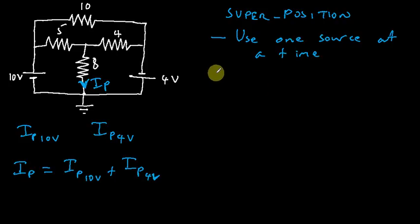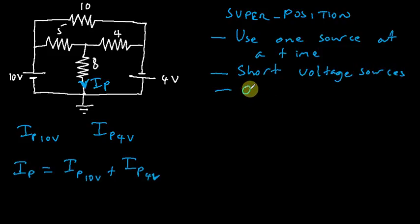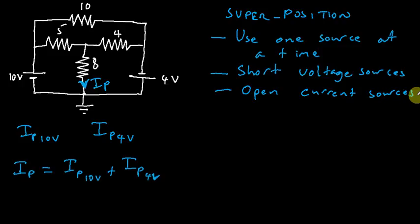Some important points to note with the superposition method: if you are removing a voltage source, you short-circuit the voltage source — remove it from the circuit and close the circuit in its place. I will illustrate that later on. So you short-circuit voltage sources, but you open-circuit current sources. We short voltage sources but we open current sources.